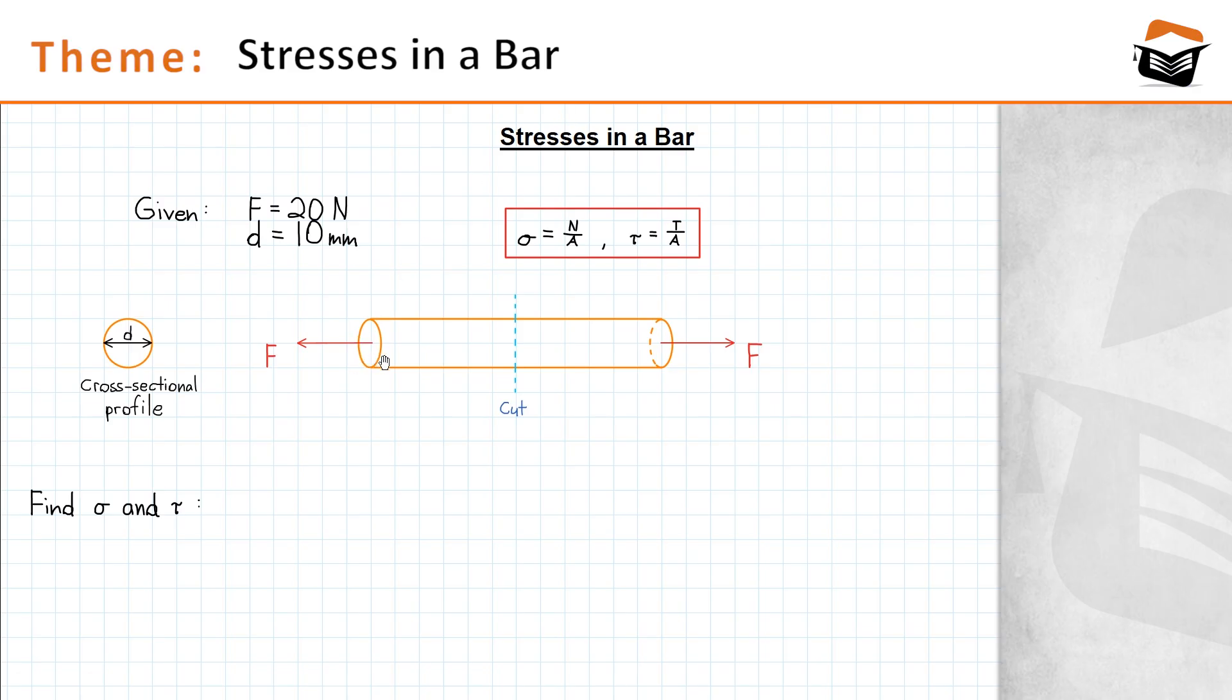The bar in our example is acted on by a tension force of 20 Newton. At this point let me address an issue that might be the source of confusion to some people. As you can see I have drawn two force vectors, one on the left side and one on the other side.